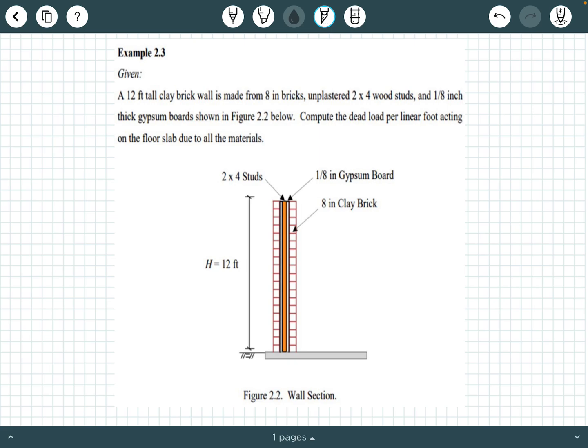In this example we are given a 12 foot tall brick wall. You can see this dimension right here is 12 feet tall, and it's made of 8 inch clay bricks. The 8 inch clay bricks are represented by these little orangey brown looking squares.